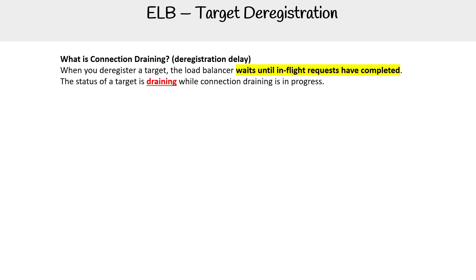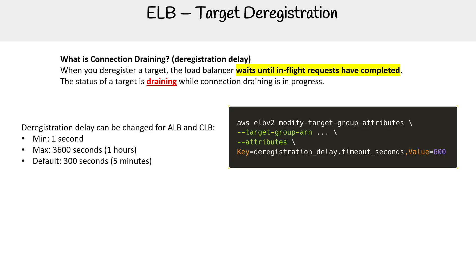Let's talk about target deregistration. Before we do, we should talk about connection draining, because this is something that's going to happen when you're trying to deregister a target. Connection draining, also known as deregistration delay, is when you deregister a target, the load balancer waits until in-flight requests have completed. The status of a target is 'draining' while connection draining is in progress.